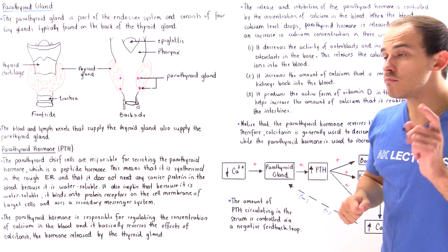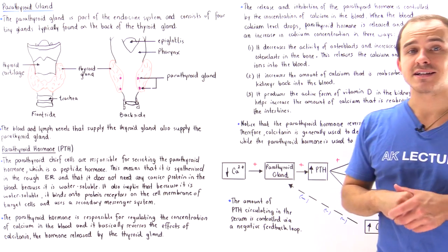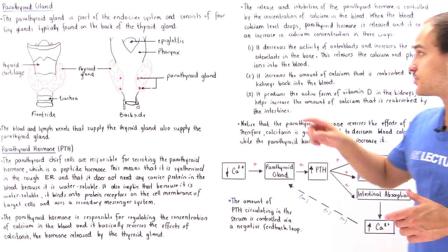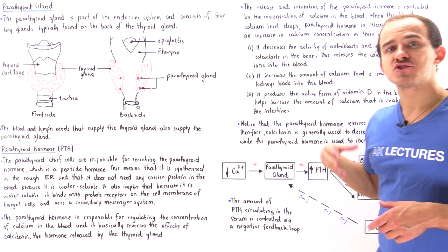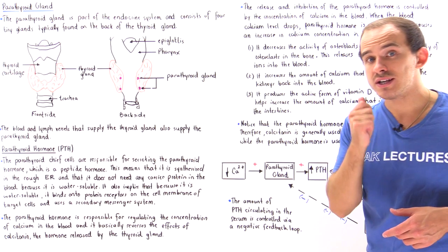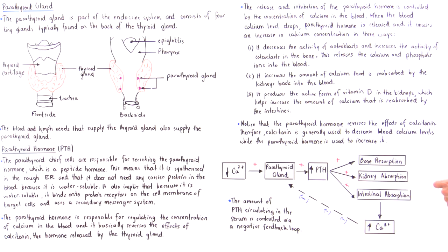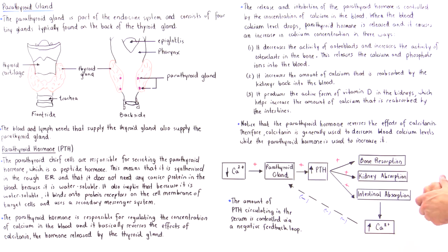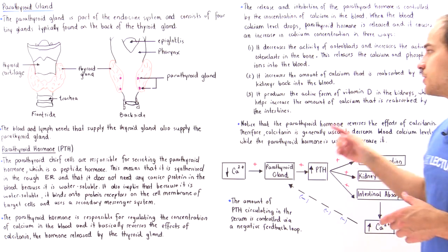The parathyroid hormone also actually affects our kidneys. It increases the amount of calcium that is reabsorbed by our kidneys, which increases the concentration of calcium in our blood and decreases the amount of calcium found in our urine.